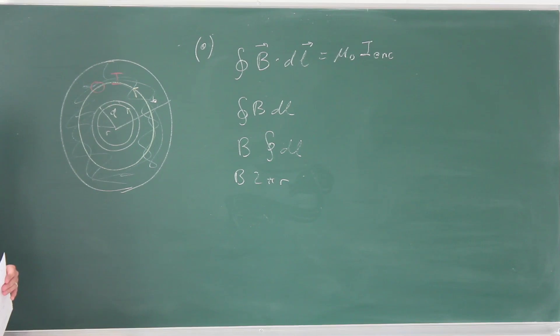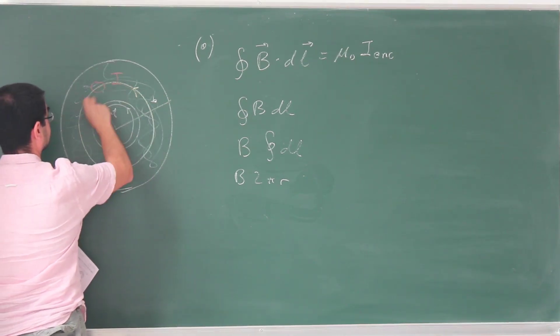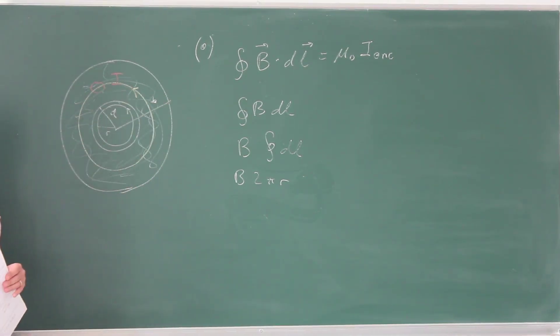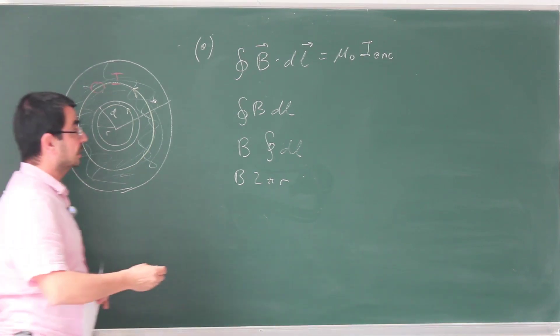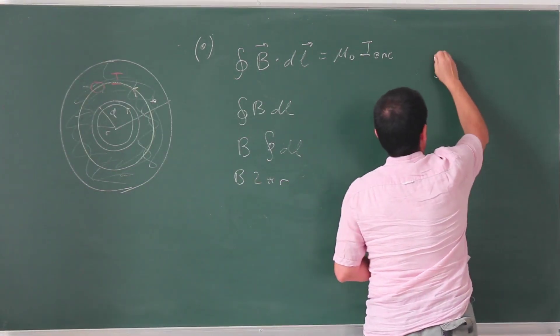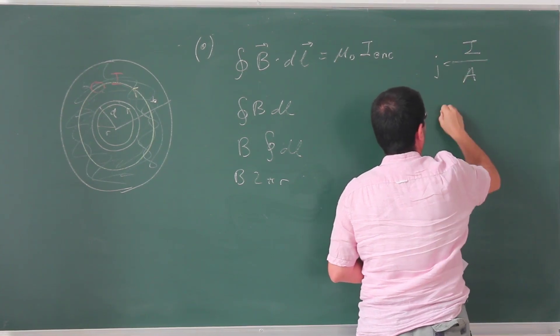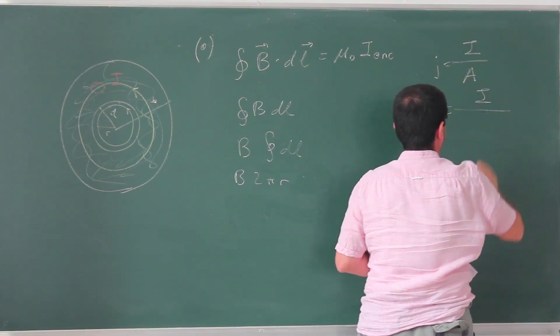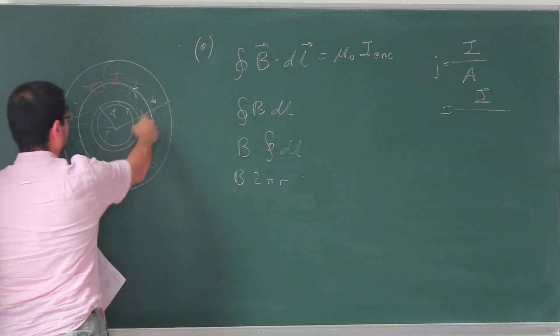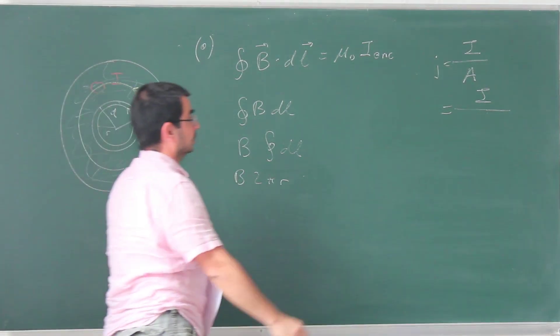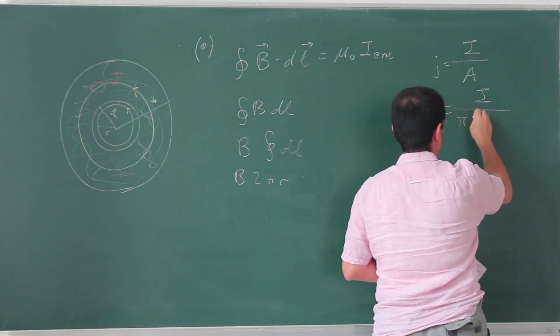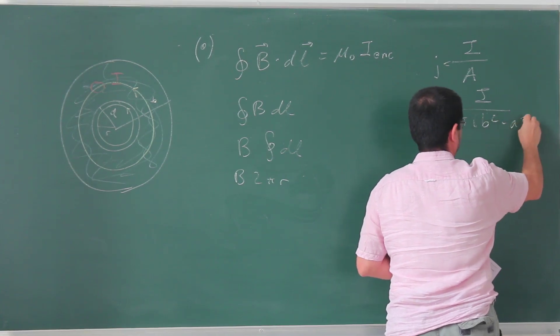So these steps are still correct, except the right hand side is not going to be 0, but we have to calculate the current enclosed, and I think the easiest way to calculate the current enclosed is to consider this region, the area of that region, and then multiply it by the current density. So what is the current density? The current density is, of course, the current divided by area. This is the current. The current density is I over π(b² - a²).